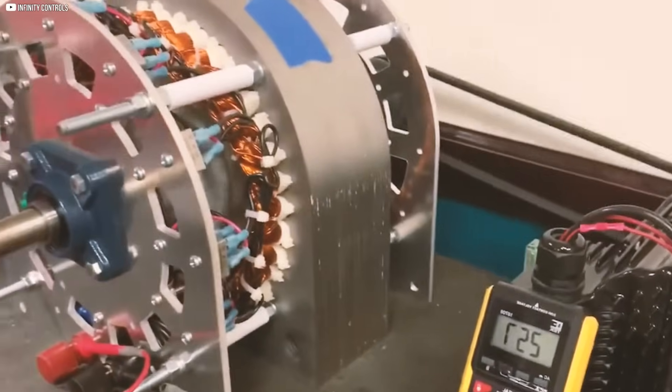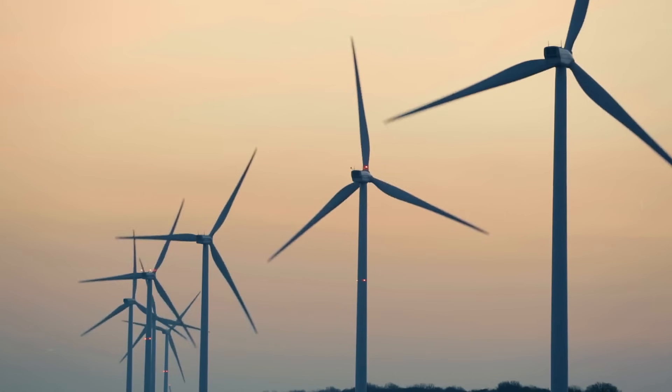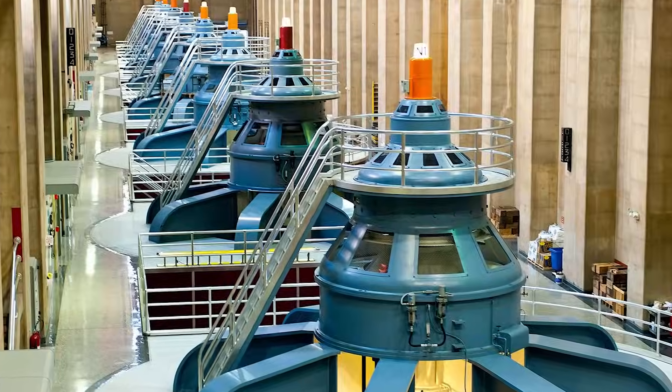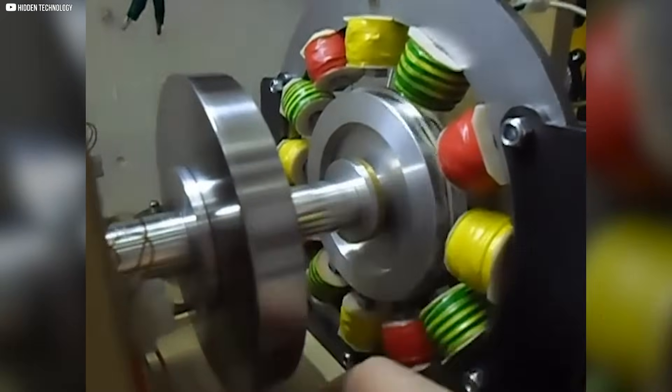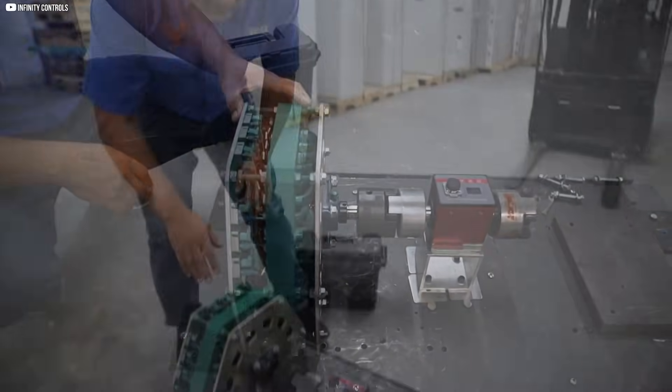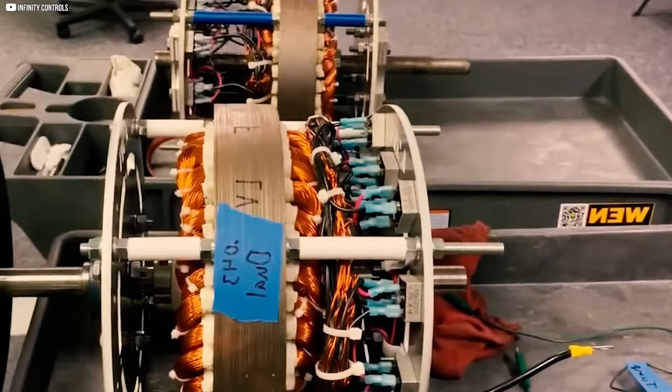This makes the iGenerator a natural fit for renewable systems. Wind turbines and hydro generators often struggle in low-speed or low-flow conditions. But with its high voltage output even at low RPMs, the iGenerator excels where others fail. It enables energy production in regions previously dismissed as non-viable for renewables, making clean power more accessible than ever before.